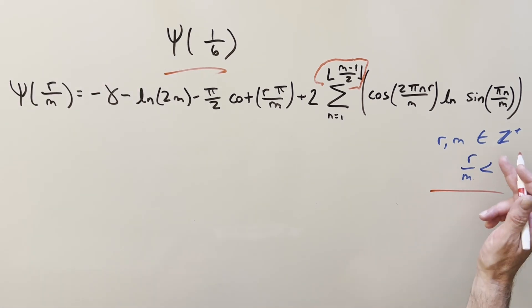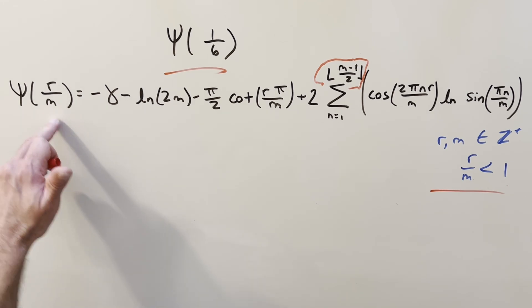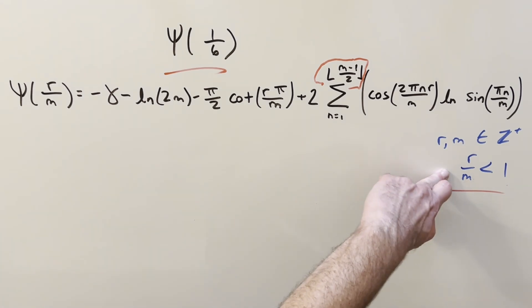So first, we have r and m are going to be positive integers. And basically, we want this reduced and we want it less than 1. We don't want to do something like 7 over 6 here or something. And we don't want it to be like 2 over 4. Let's just reduce it to 1 over 2. I think it's going to be easier to just reduce it here and have a positive value between 0 and 1.